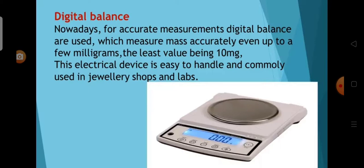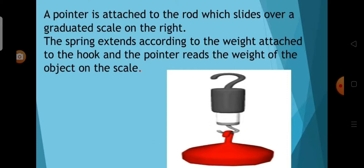Next is the digital balance. Nowadays, for accurate measurements, digital balances are used, which measure mass accurately even up to a few milligrams, the least value being 100 milligrams. The electrical device is easy to handle and commonly used in jewellery shops and labs. The last one is the spring balance. This balance helps us find the weight of an object. It consists of a spring fixed at one end and a hook attached to a rod at the other end. It works by Hooke's law. A pointer attached to the rod slides over a graduated scale, and the spring extends according to the weight attached to the hook, allowing the pointer to read the weight of the object.